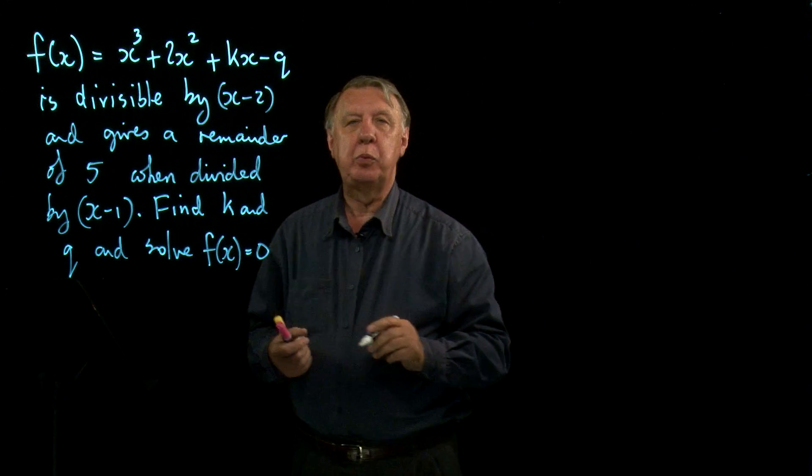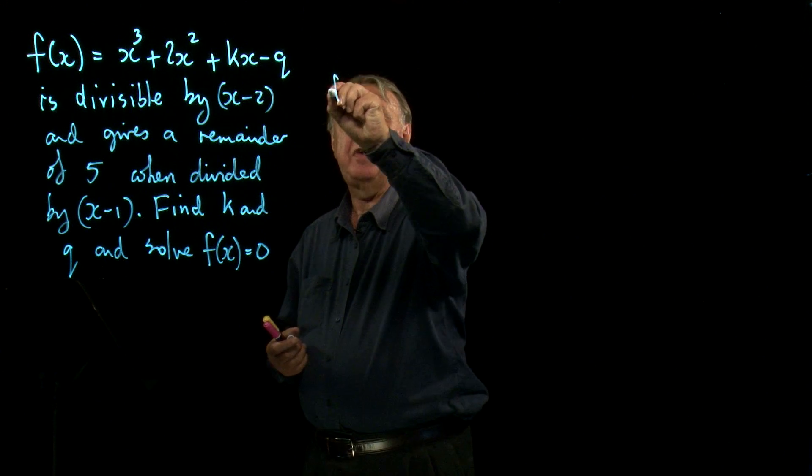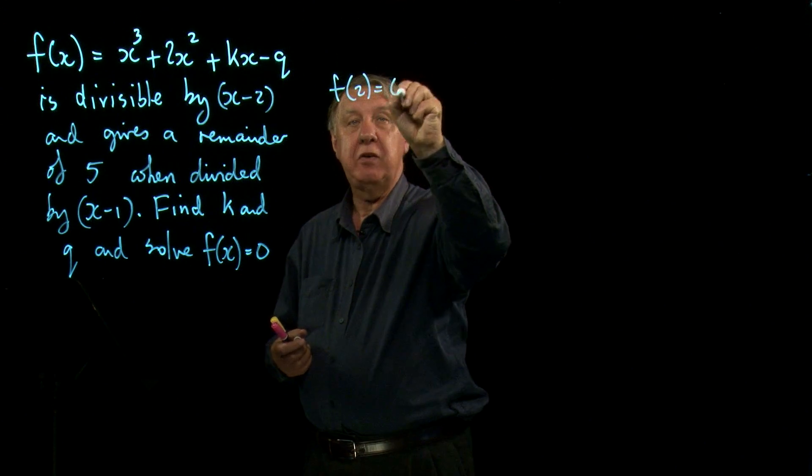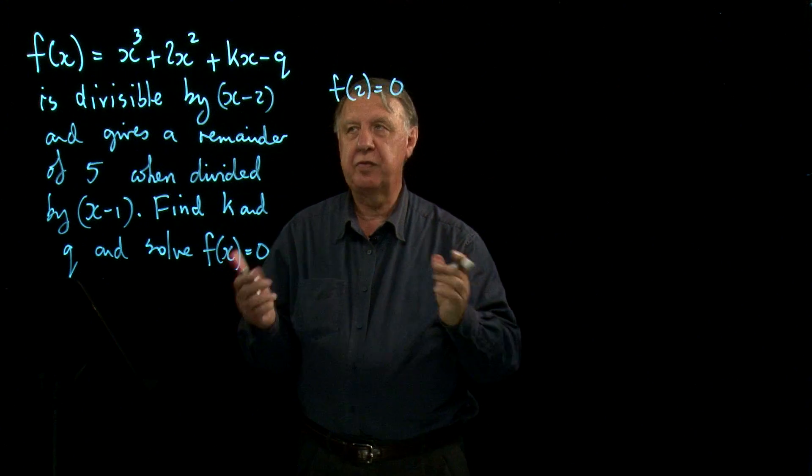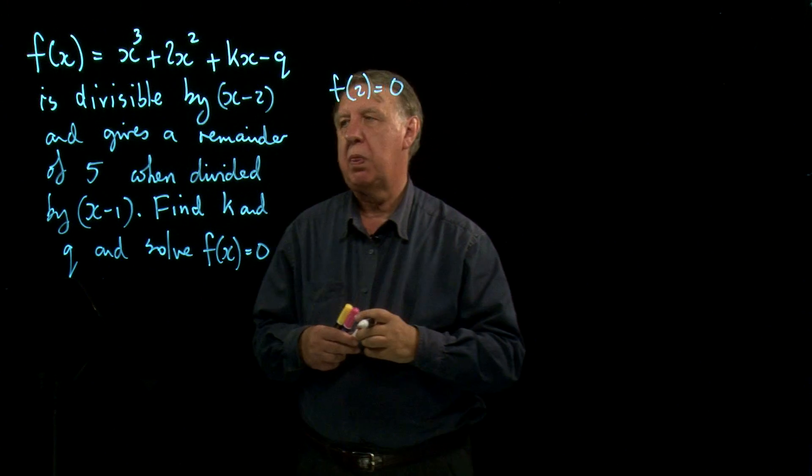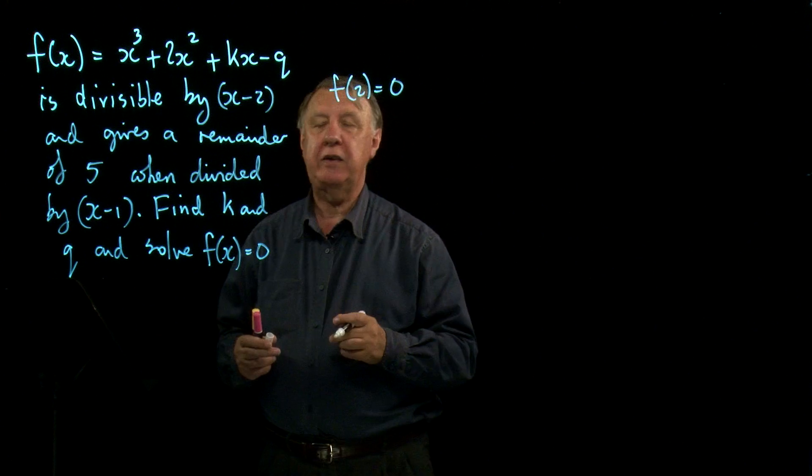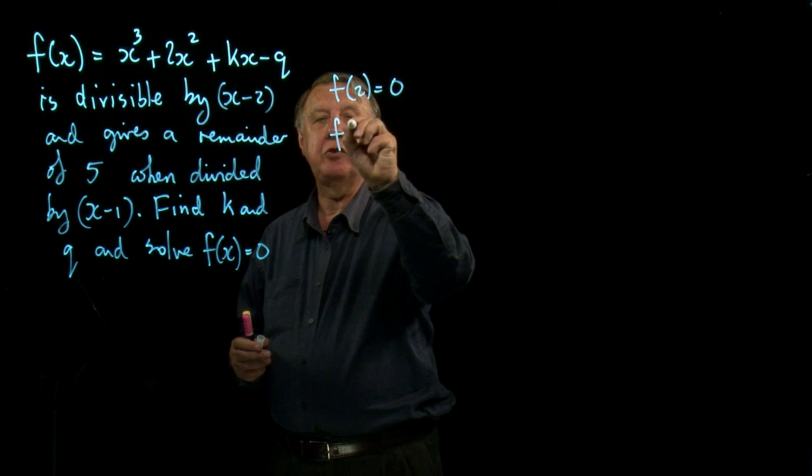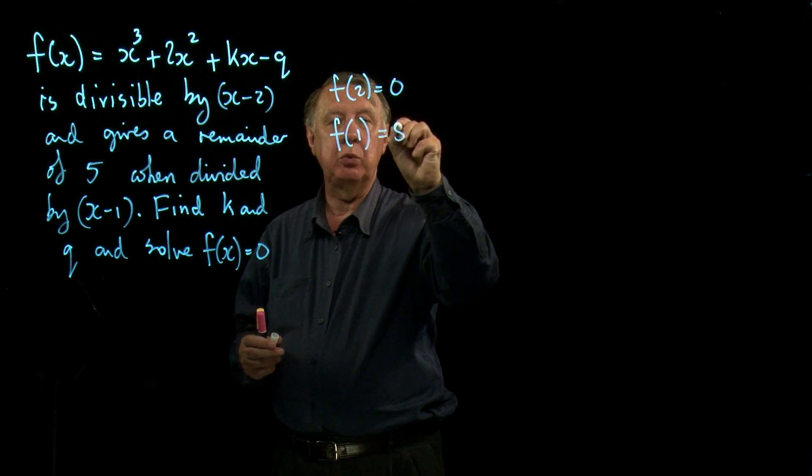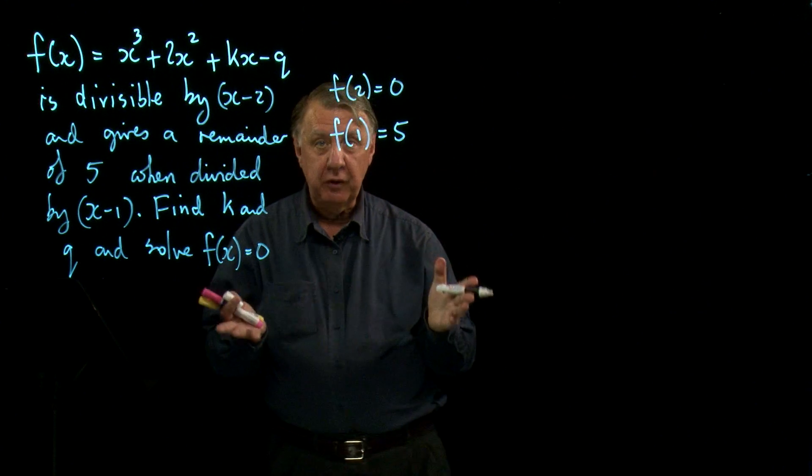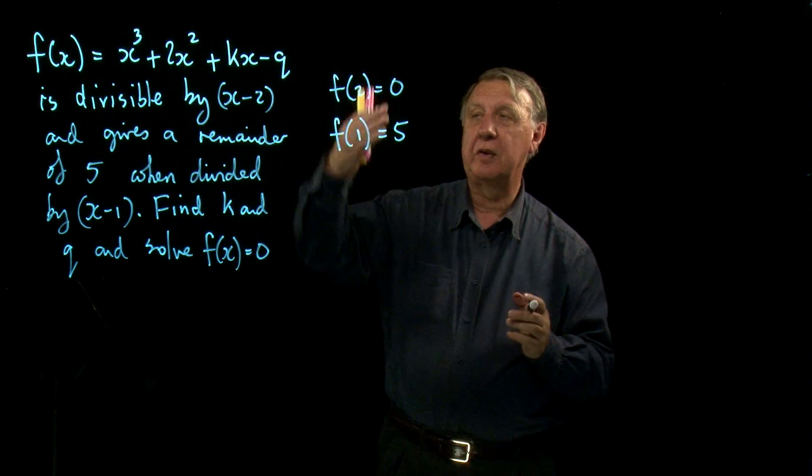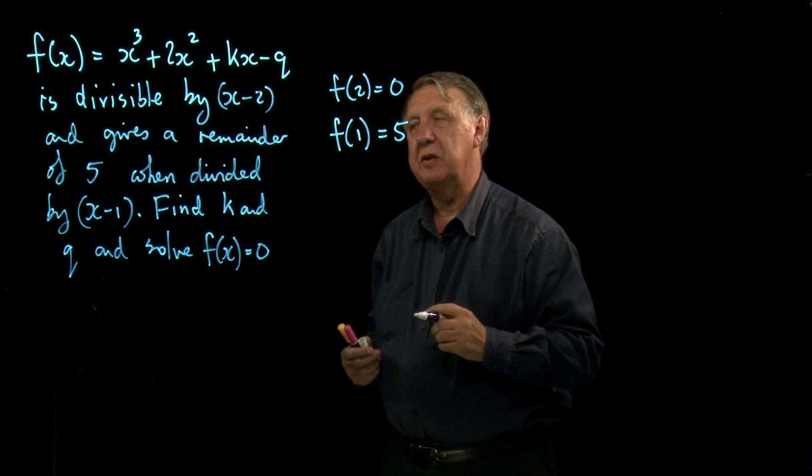If it's divisible by x minus two, then function two must be zero. That's what the factor theorem says. If it gives a remainder of five when divided by x minus one, then function one must equal five. That's what the remainder theorem says. So we've got the factor theorem and the remainder theorem.